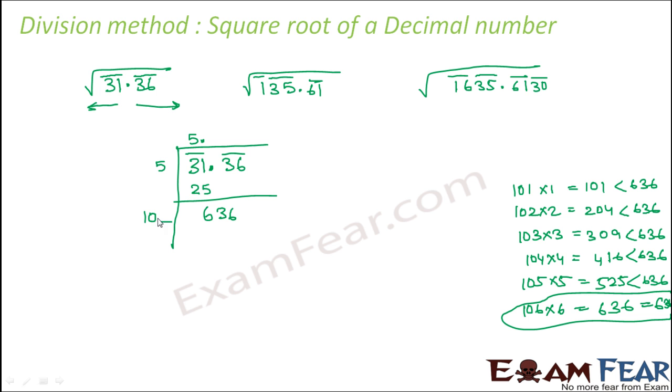So this is what we were looking for. So we put 6 here, 6 here, you get 636. Therefore, the square root of 31.36 is equal to 5.6.